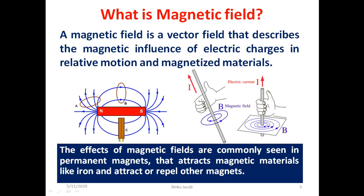First we start with Magnetic Field. A magnetic field is a vector field that describes the magnetic influence of electric charges in relative motion and in magnetized materials. The effects of magnetic fields are commonly seen in permanent magnets that attract magnetic materials like iron, and attract or repel other magnets.